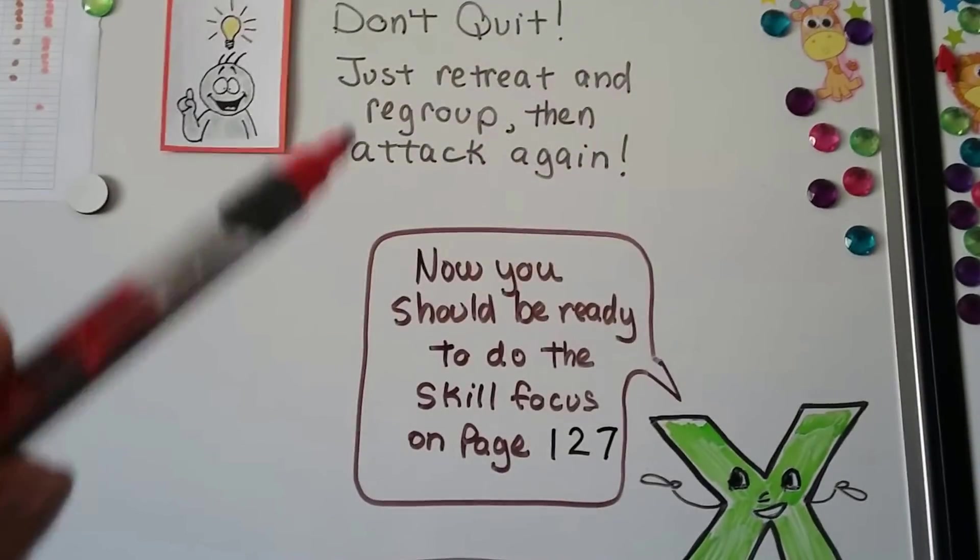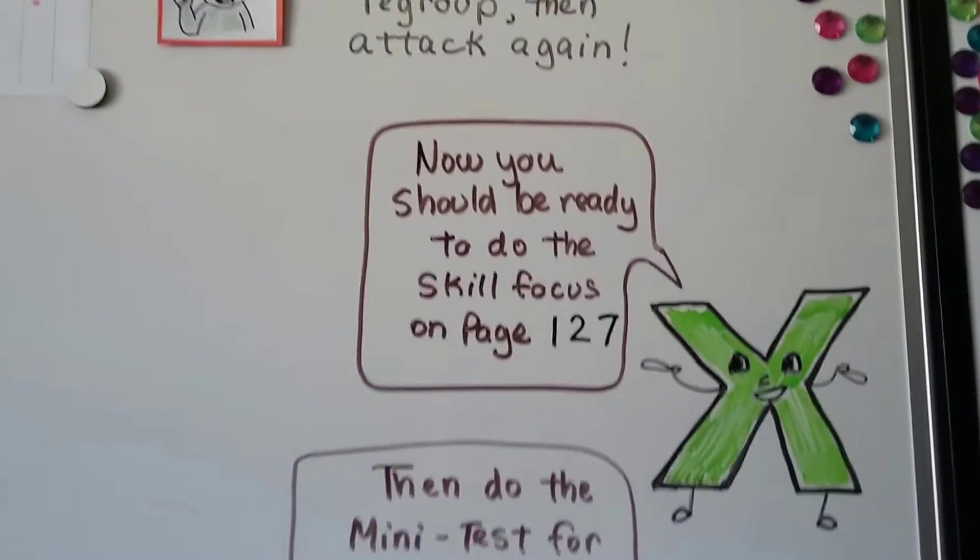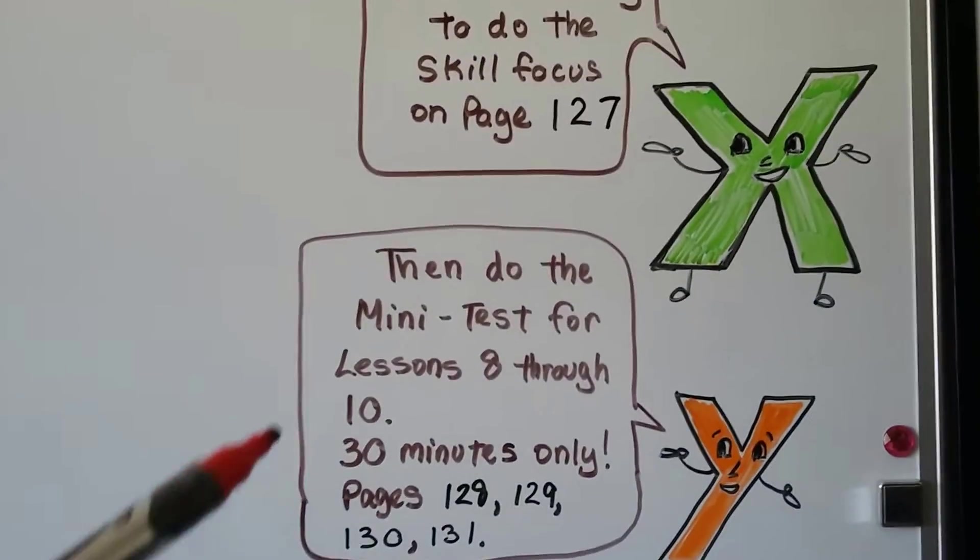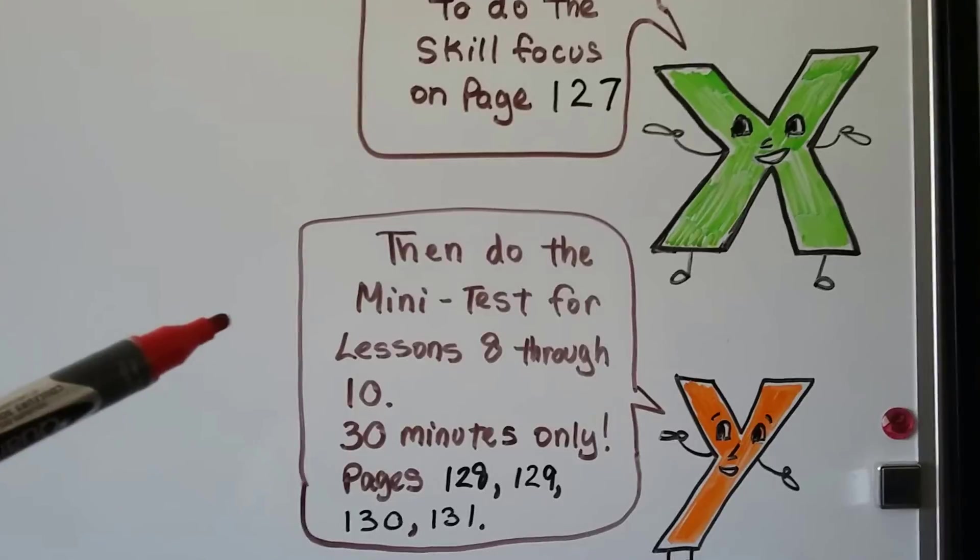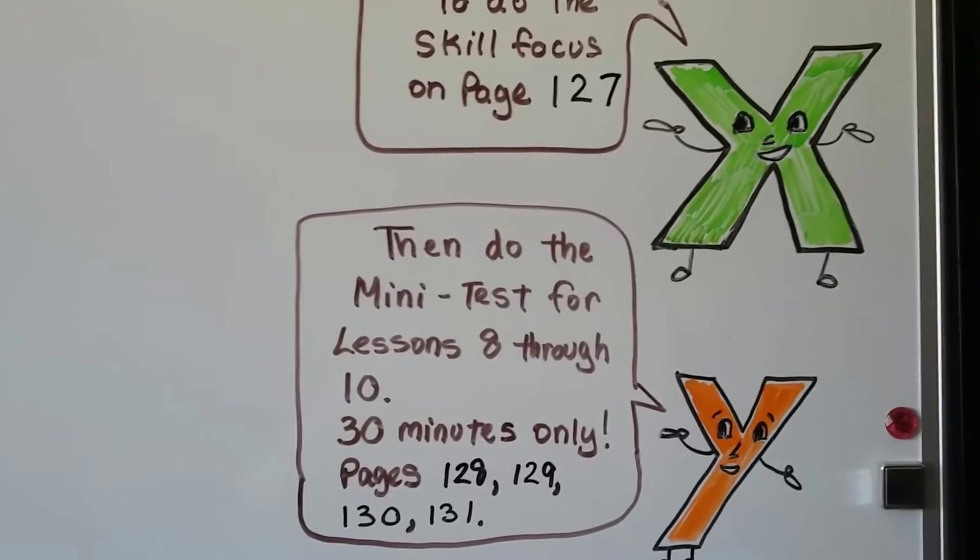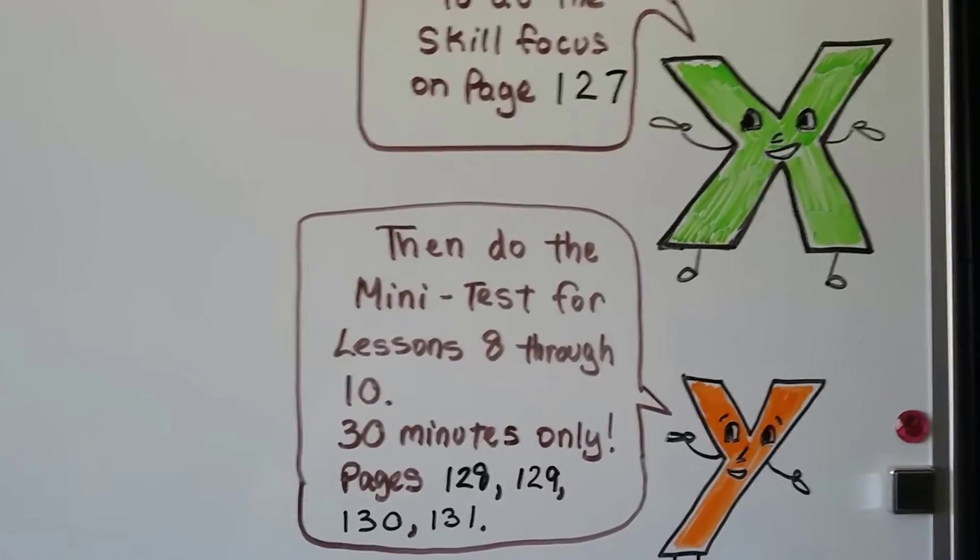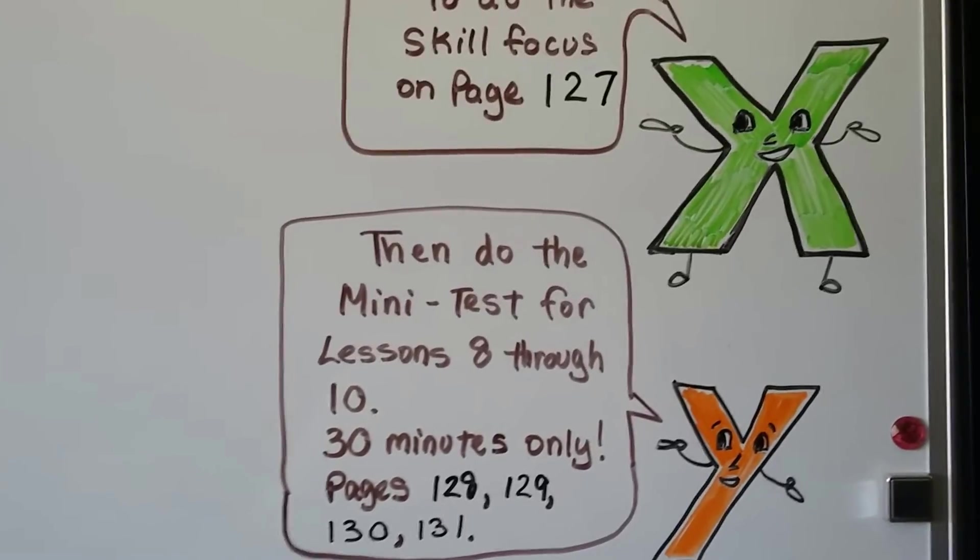If you have trouble on these, don't quit. Just retreat, regroup, and attack again. Go back to the beginning of chapter 8, because this is lessons 8 through 10. Go back to the beginning of chapter 8. Figure out where it went wrong. What you're having trouble with. It might just be one little thing.